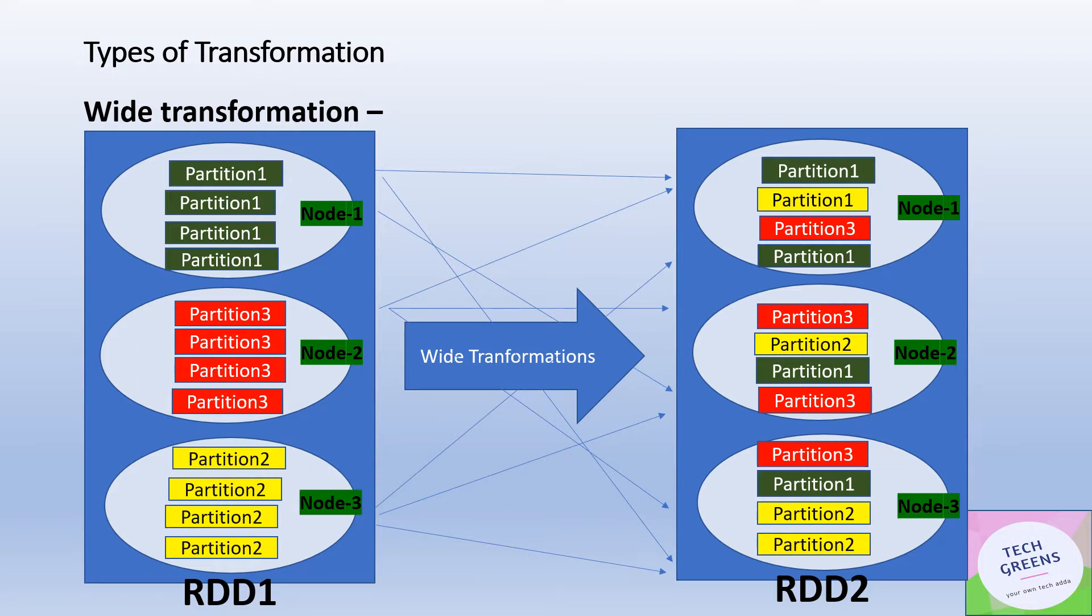Suppose we're trying to do a group by on RDD1. We apply group by function on a particular column. That column, according to whatever the partition key is, may be sitting across different nodes. Take an example: suppose we have employee ID and department. ID is the partition key - IDs 1, 2, and 3 are sitting in nodes 1, 2, and 3 with their corresponding departments. But department is not a partition key. Now we're trying to apply group by on the department function. To do the group by on department, data needs to be collated across nodes 1, 2, and 3. We'll have to shuffle the data and then do the processing. When we finally create RDD2, the data now would reside across different nodes post the group by function.